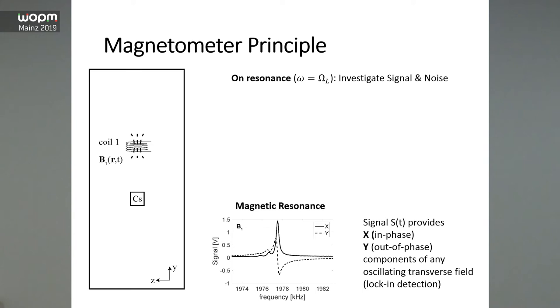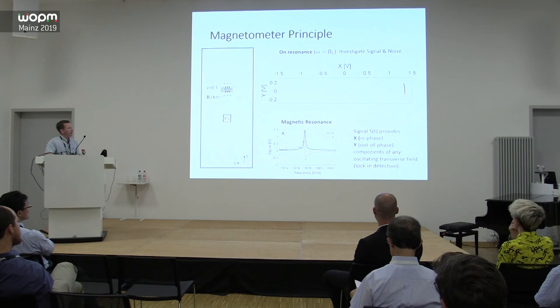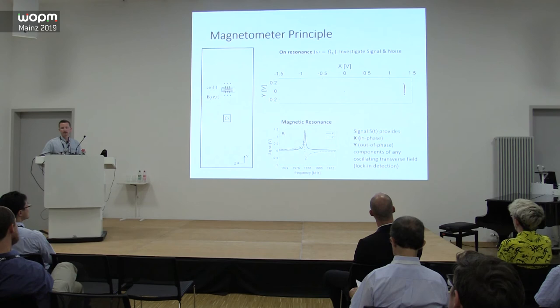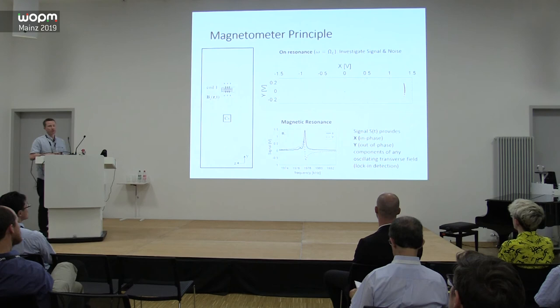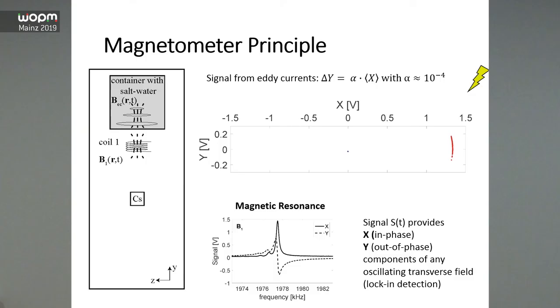When on resonance, X is large and Y is zero in the 2D plot. However, we observe significant noise experimentally in the X direction, caused by instability of the current source driving the static field coil — a common and difficult-to-avoid noise source. When you place the salt water there, you expect a small signal from eddy currents in the Y direction — a tiny shift in all data points — but this would be drowned in noise. That's obviously a problem.